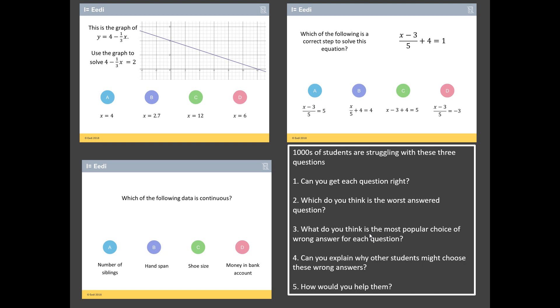And I've got five challenges for you. Challenge one: can you get each of these questions correct? Challenge two: out of these three questions, what do you reckon the worst answered question is? And then question three, I wonder for each of these questions if you can identify what you think the most popular choice of wrong answer is. And then it gets really challenging. I wonder if you can explain why other students may have chosen these wrong answers. And finally, this is probably the most challenging of all: imagine you were sat next to a student and they were absolutely convinced that their wrong answer was right. How would you convince them, not only that you're right, but in a nice way, that they're wrong?